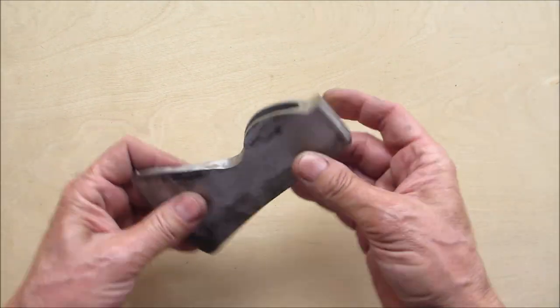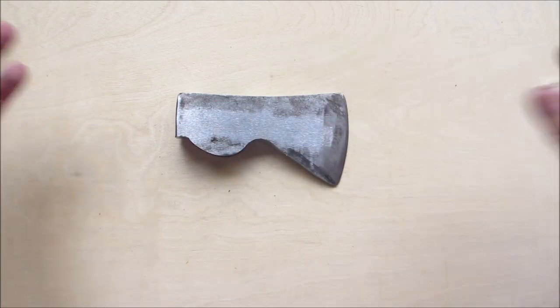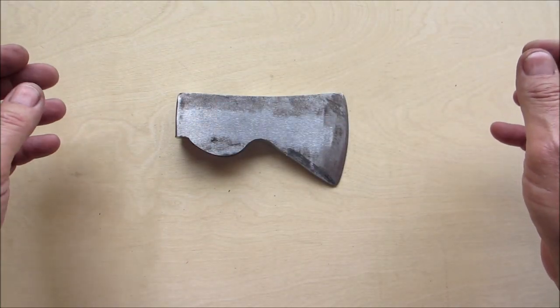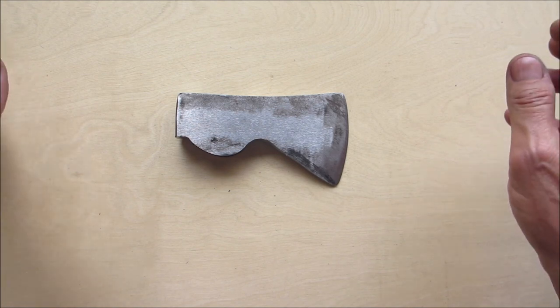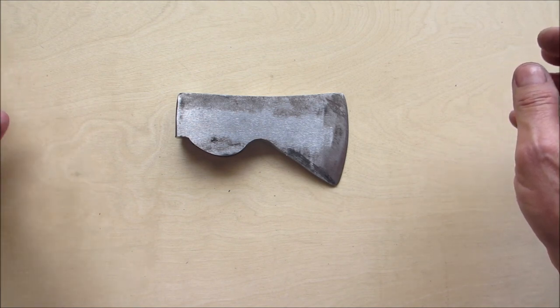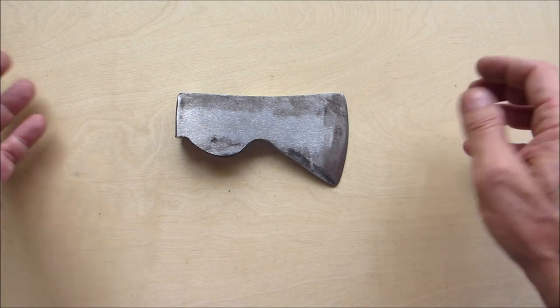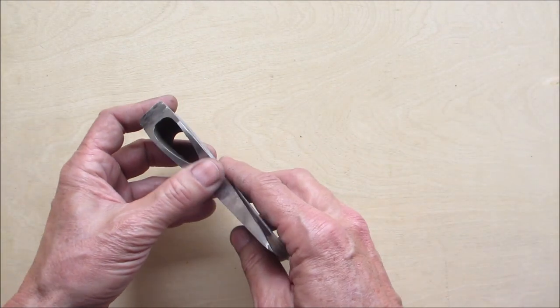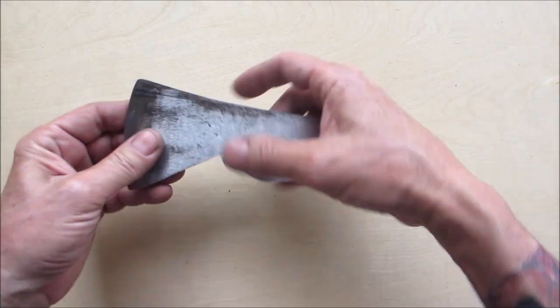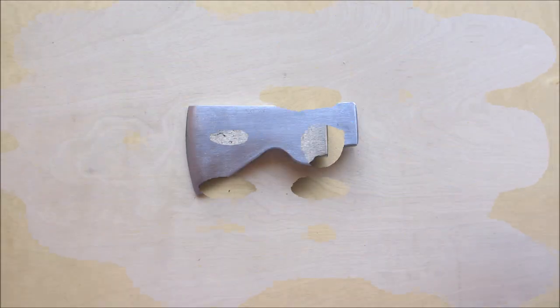Hopefully it ends up coming out the way I envisioned it. The next big thing is I don't have any hickory—I know that's the perfect handle material—but I do have a nice oak log that's been seasoned for about a year or so. I may attempt to split that and make an oak handle out of it, but I'm not sure yet.